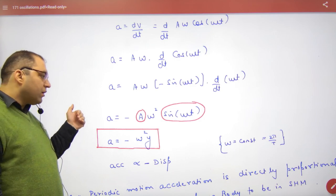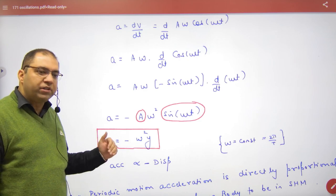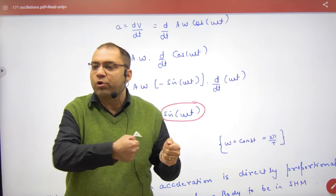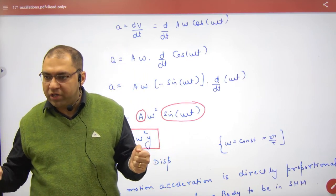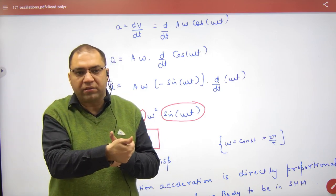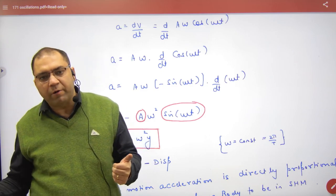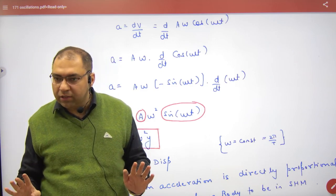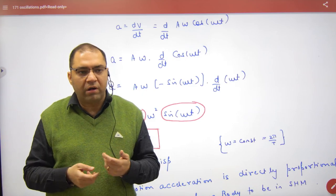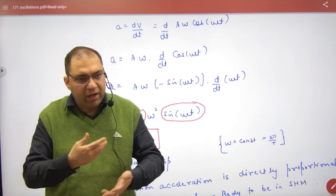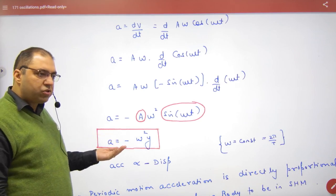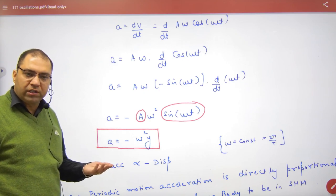Acceleration is proportional to displacement and it has a negative sign. The negative sign means that if a body has displacement y, the acceleration is in the opposite direction — it is a restoring acceleration. Acceleration is proportional to displacement with negative sign, meaning there is a restoring force. So in systems where restoring forces exist, acceleration follows minus ω²·y.